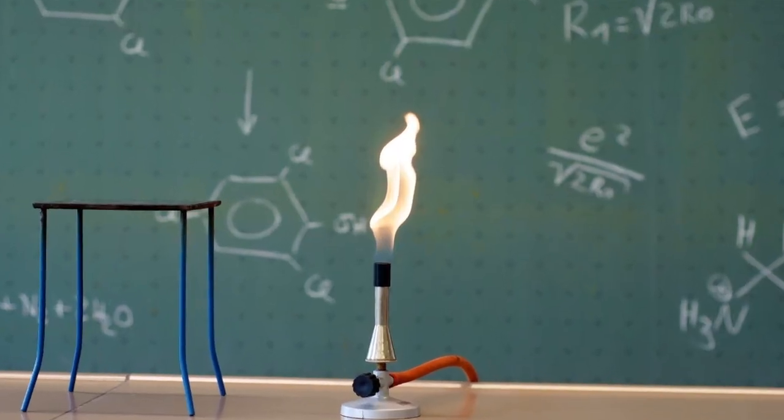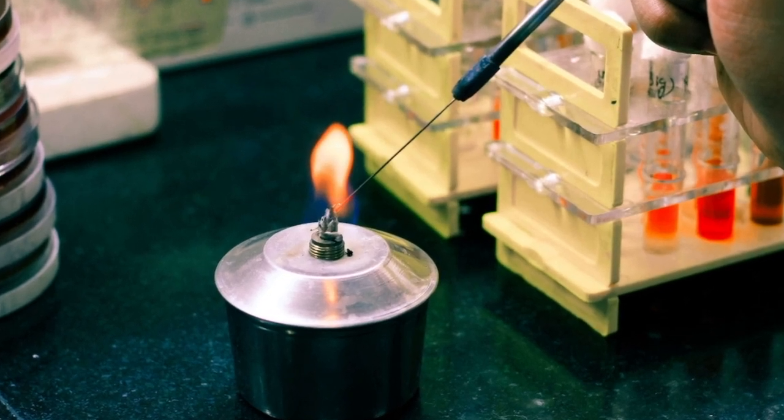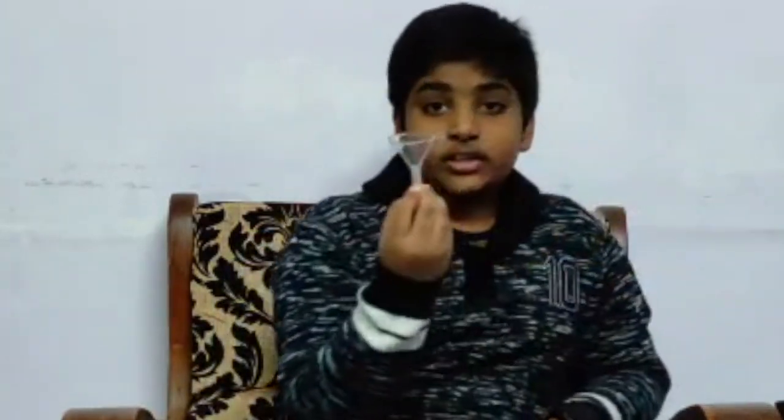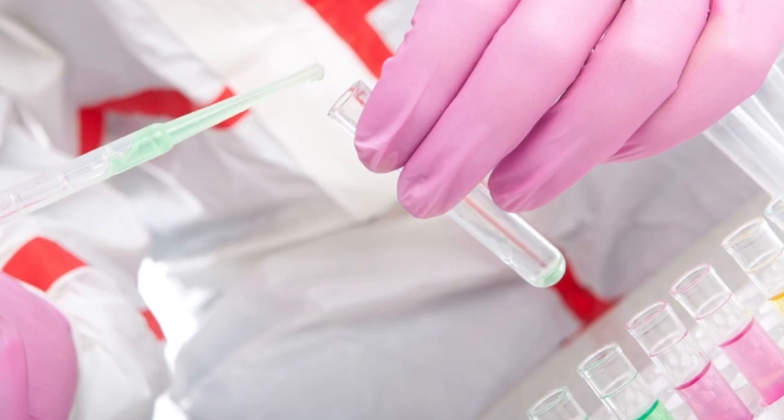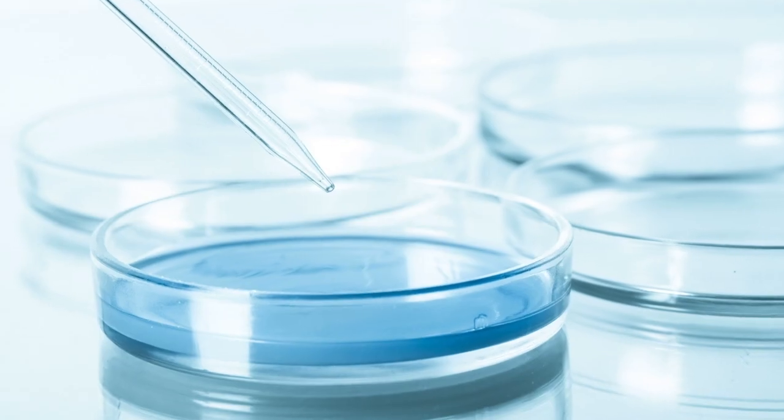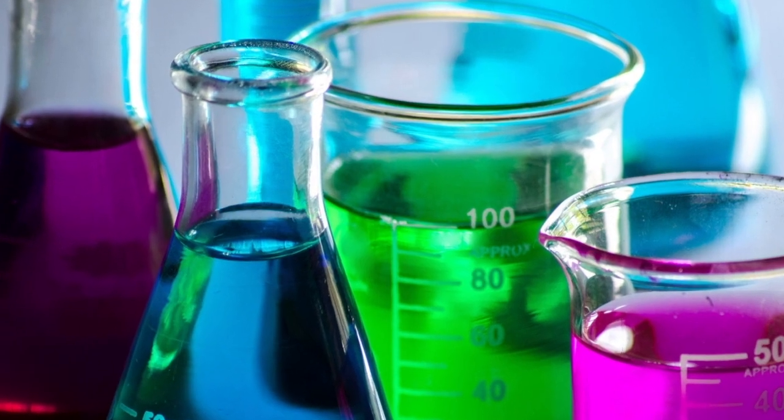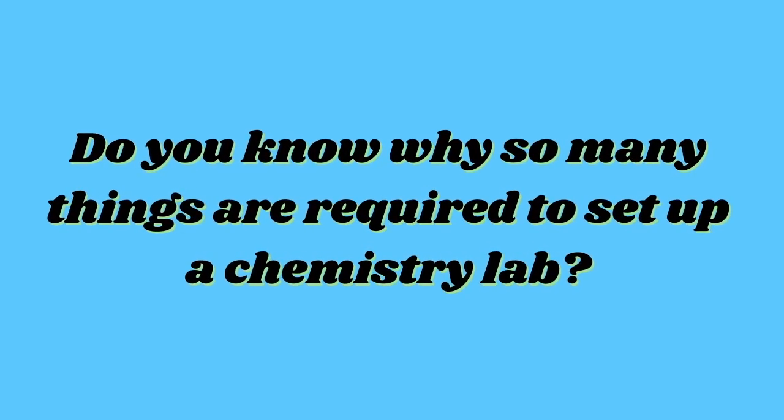Other lab equipment includes a Bunsen burner, spirit lamp, retort stand, tripod stand, wire gauze, different types of funnels, tubes, measuring apparatus, china dish, petri dish, and more. There are also different types of papers, chemicals, and reagents. It's no joke to set up a chemistry lab! Do you know why so many things are required? If you know the answer, write to us in the comments below.